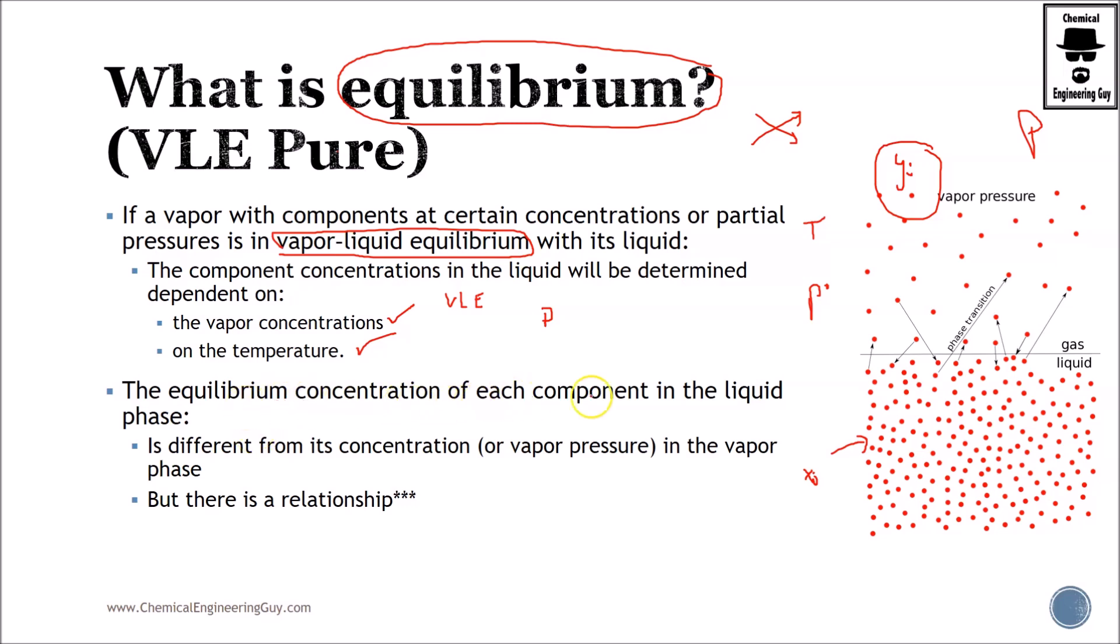The equilibrium concentration of each component in the liquid phase is different from its concentration in the vapor phase. So not necessarily xi will be equal to yi. Even though you can have that case, it's not normal to have that. Instead, there is a relationship. Many times we can relate y with something, let's say a slope and x. So the slope may be greater than 1, lower than 1, and so on.